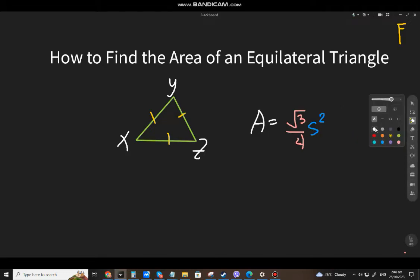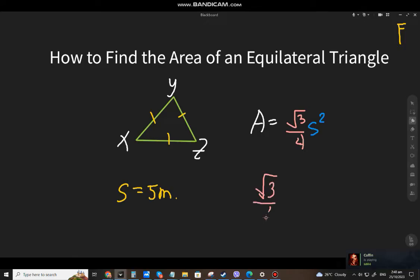Our one side, let's say we have 5 meters. Okay, 5 meters, that's it. Because you know, just apply the formula. That will be square root of 3 over 4 and s squared. That will be 5 squared, right?